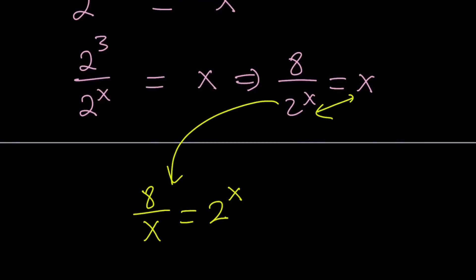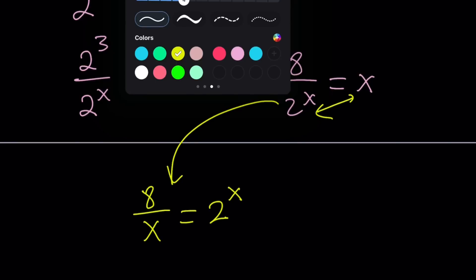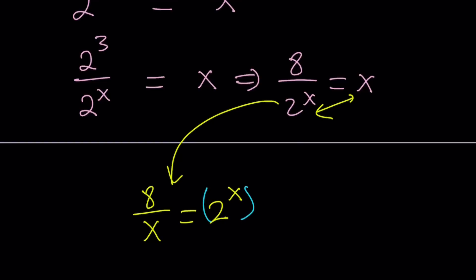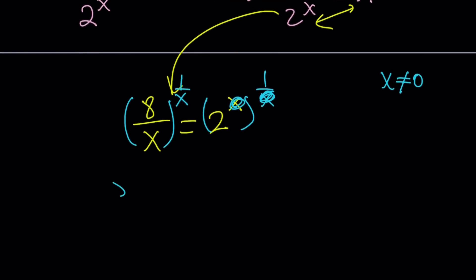Now, why did I do that? I wanted to isolate the expression with the exponent of x — so it's on the right-hand side — and then do something to get rid of that exponent, leaving a nice expression on the left-hand side. So let's go ahead and raise both sides to the power of 1 over x, noting that x cannot be 0, because if x is 0 we don't have a valid equation. So x equals 0 is not a solution. These two cancel out, leaving us with something nice, and I'd like to make it even nicer.